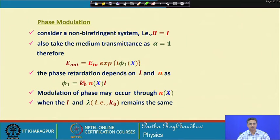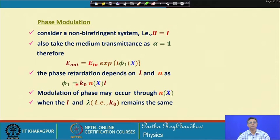If L is fixed and lambda is fixed for a chosen monochromatic wavelength, then it is only the refractive index n that we can modulate, which will in turn result in modulation of the phase phi. We will see how this phase modulation scheme is implemented in electro-optic modulators.